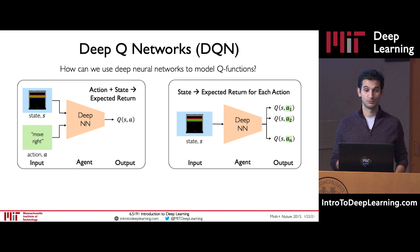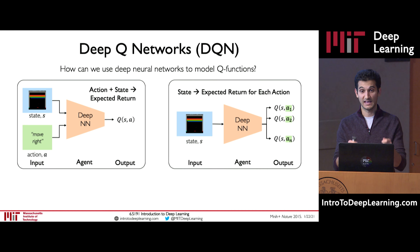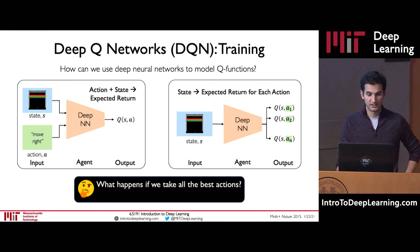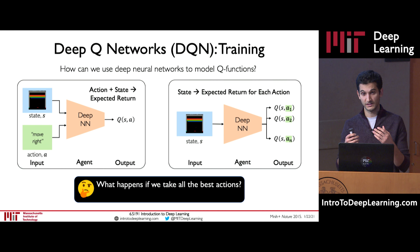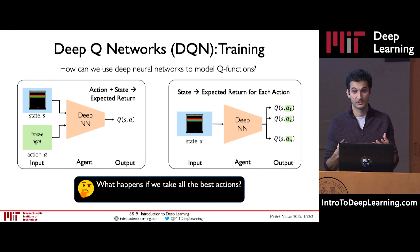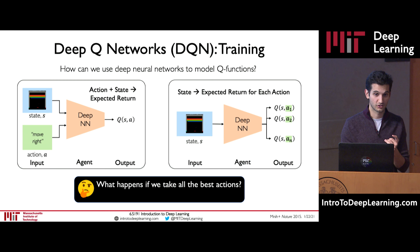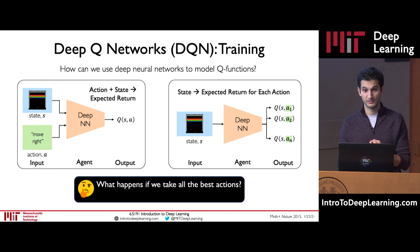With approach one, to find the best action we'd have to run the neural network K times, propagating information K times. With approach two, we feed in the state once, extract all Q values simultaneously, and simply find the one with the maximum Q value — that's the action we take. For example, if Q(S, A2) is the highest out of all K Q values, then action A2 is the one we ultimately pick and move forward with at that state.